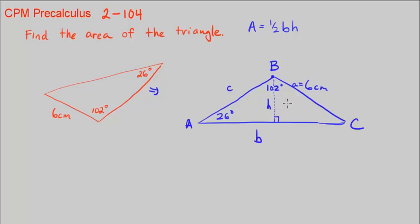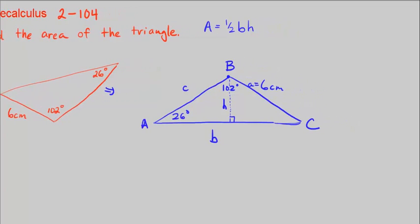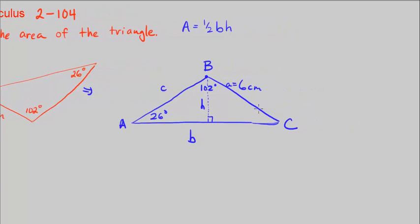So what I need to do, I need to find the length of B, and I need to find the length of H. Base and the height of my triangle, and then I can go ahead and plug it into this formula. I can use the law of cosines and the law of sines to help me.